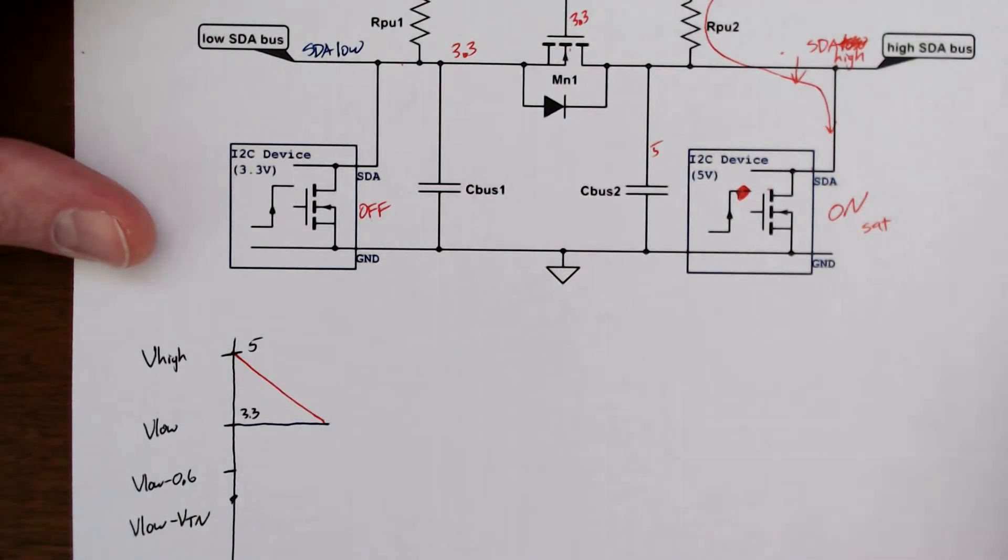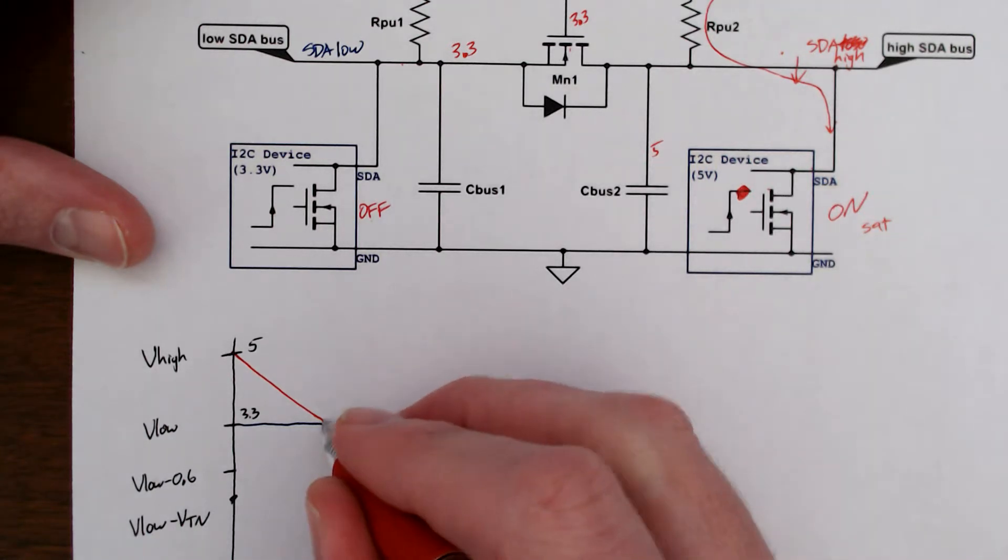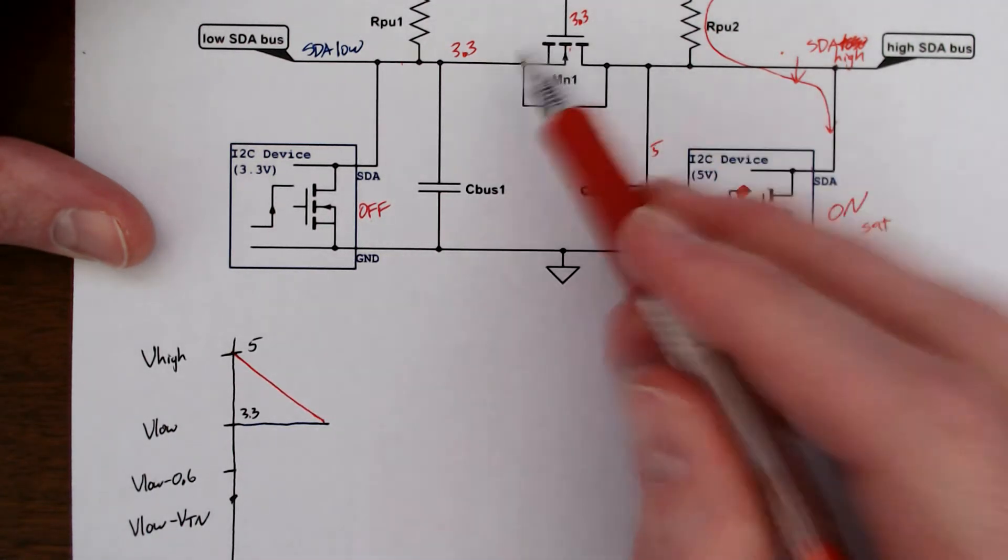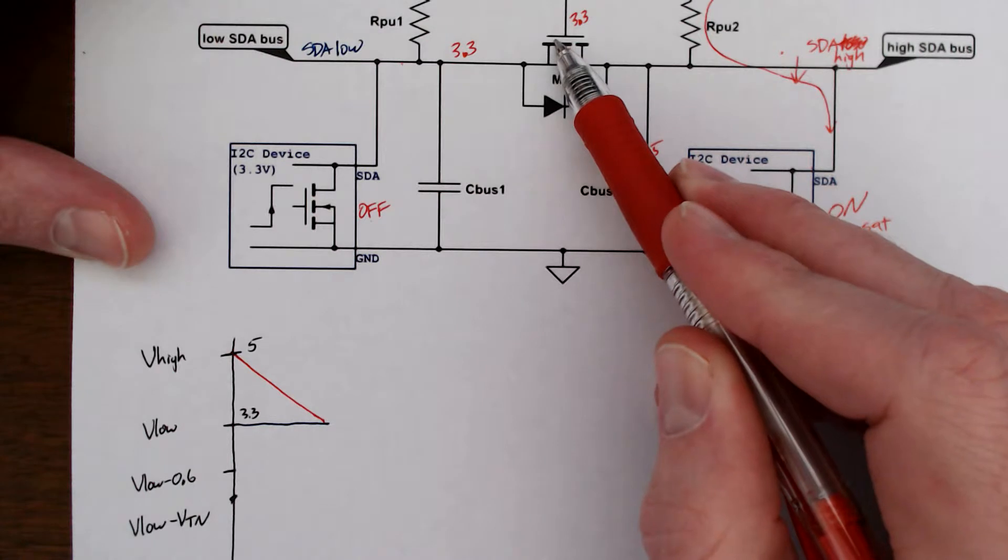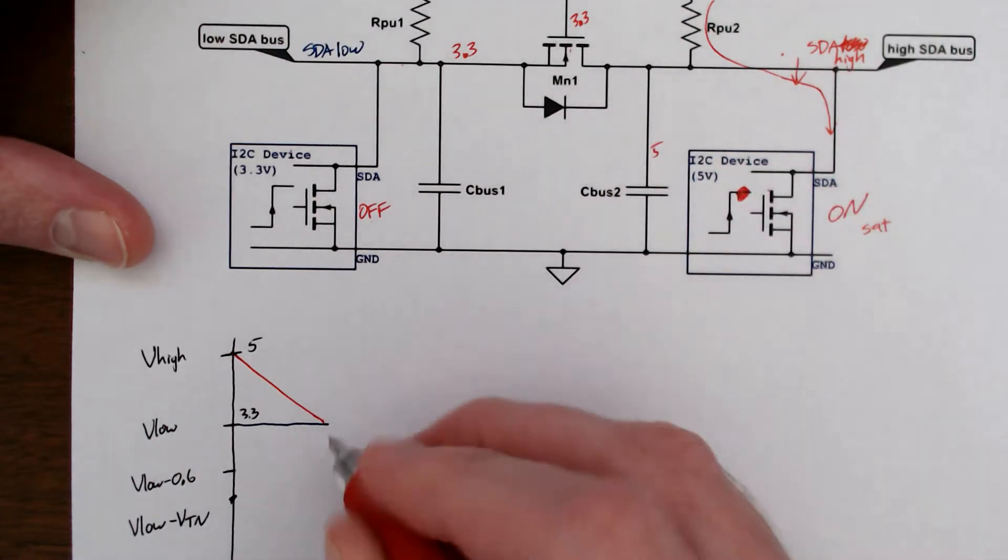All right. So now what's going to happen is we're going to, this device, and remember, this transistor is off. All right. Now this node keeps going down and down and down and down.